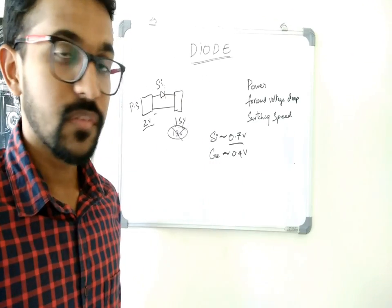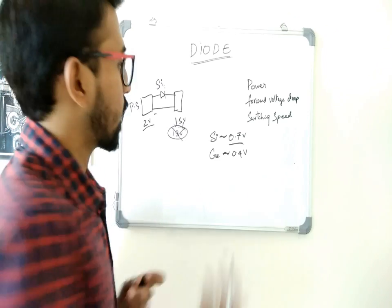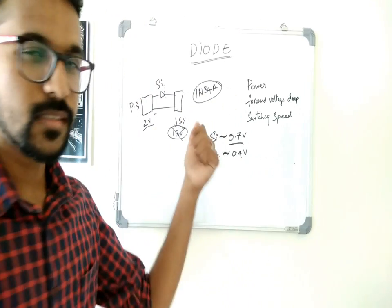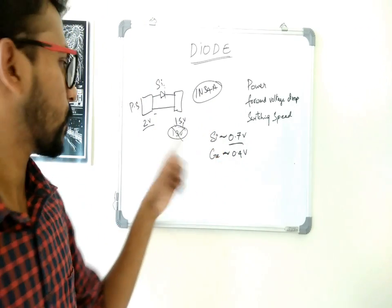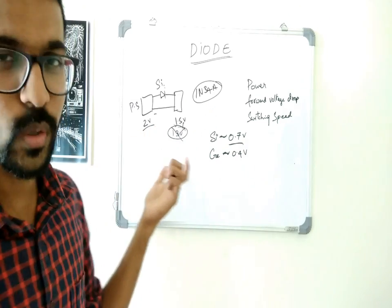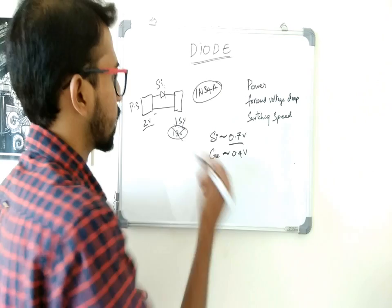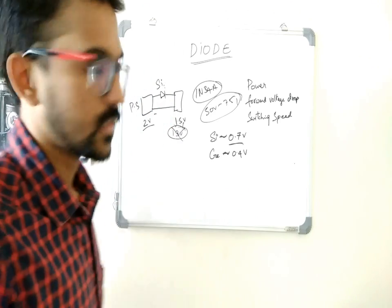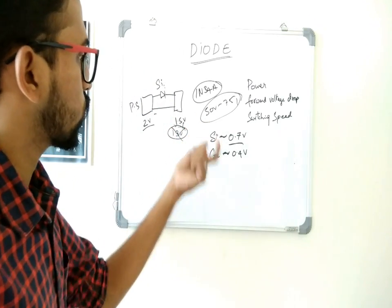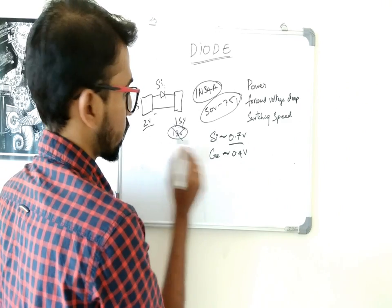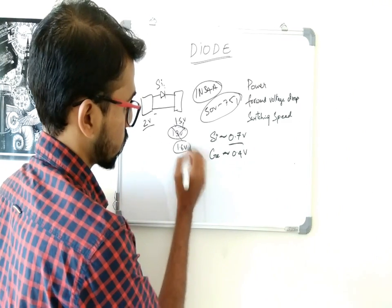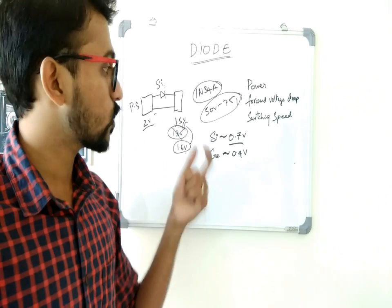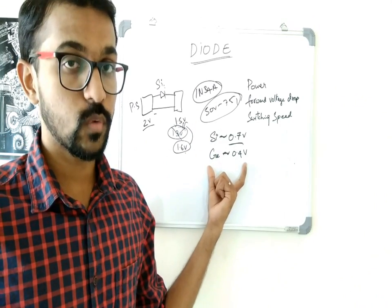There are many germanium diodes available in the market — low power and high power. The 1N34A, I believe, is a germanium diode but a low power one. As I said, it will be 2 volts with very low current, so this should be fine. I think this can handle voltages of around 50 to 75 volts. If you use this diode, the voltage will be 2 minus 0.4 volts, which comes to about 1.6 volts — almost close to 1.5 volts. In cases where you feel that the forward voltage drop matters, you'll go for a germanium diode which has a very low forward voltage drop.